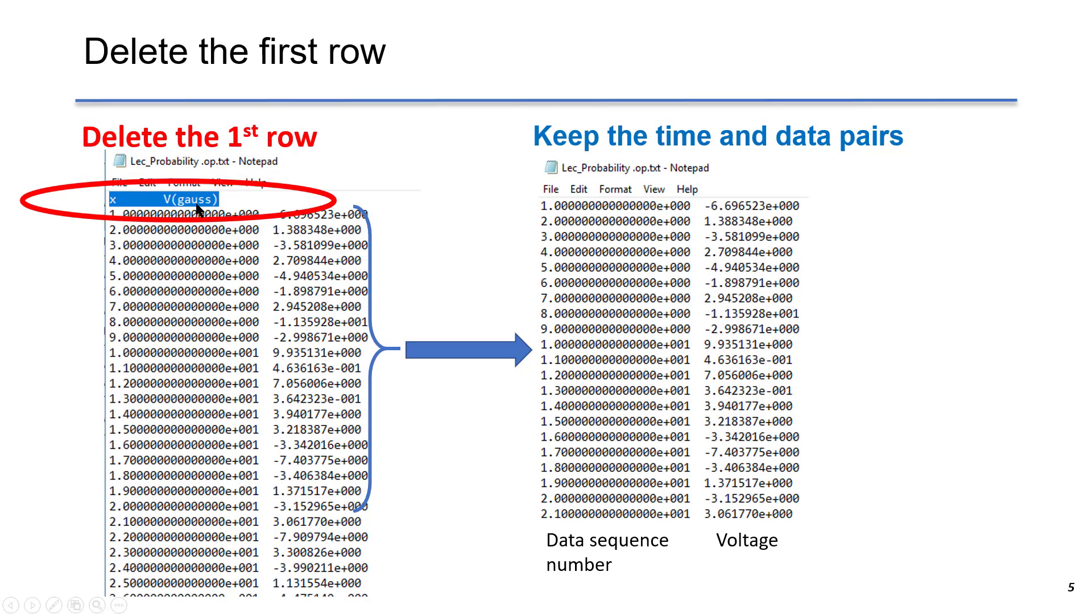We delete the first row, which is the header, and we save it, so we keep the time and data pairs. Again, the first column is 1 to 100, that's the data sequence number. The second one is voltage.